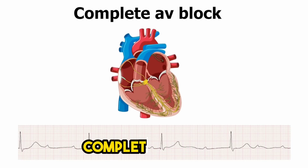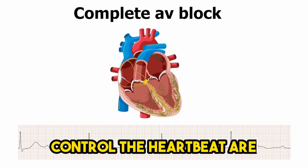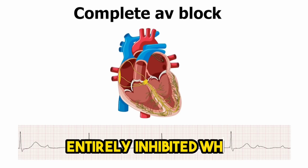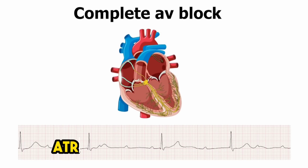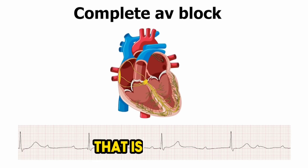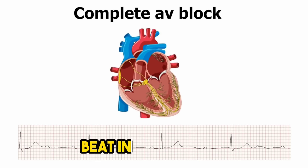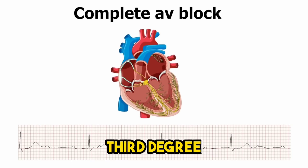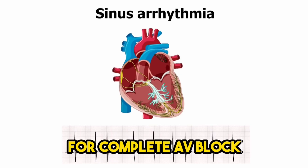In complete atrioventricular, or AV, block, the electrical signals that control the heartbeat are entirely inhibited when they pass through the AV node. That is, the atria and ventricles beat independently of one another. Third-degree AV block is another name for complete AV block.